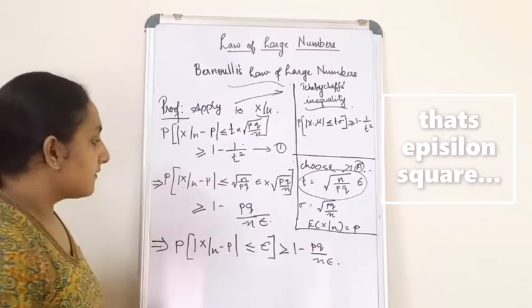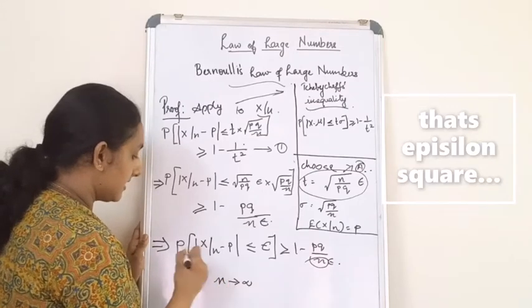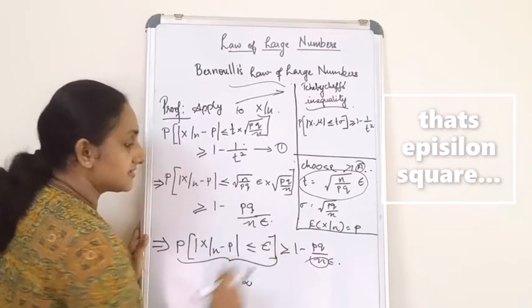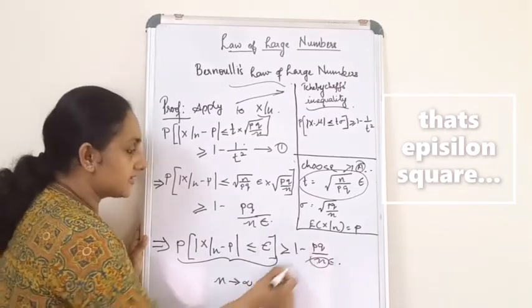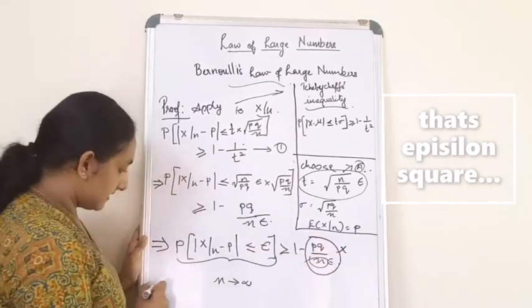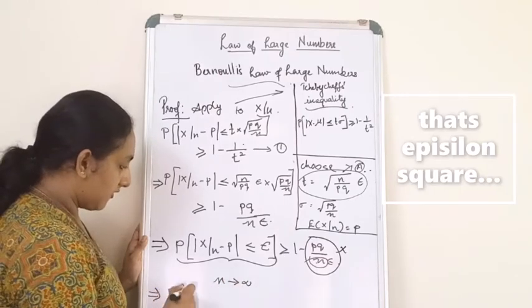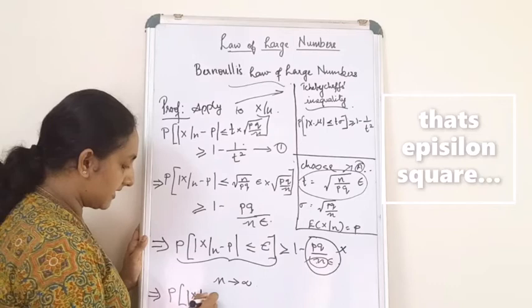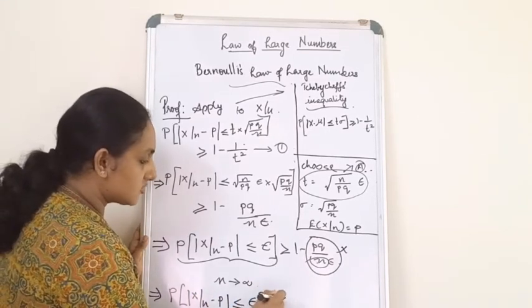As you can see, when n tends to infinity, n is in the denominator, so the term pq/(n·epsilon²) gets cancelled — it goes to zero. Therefore, when n tends to infinity, the probability of |x/n − p| less than or equal to epsilon tends to 1. This completes the proof of Bernoulli's Law of Large Numbers.